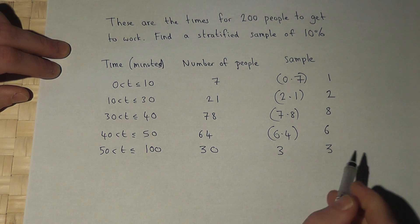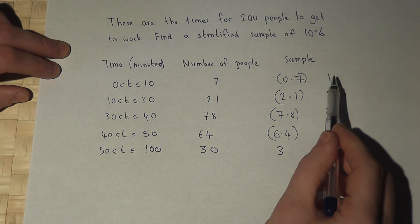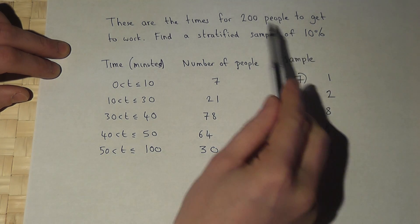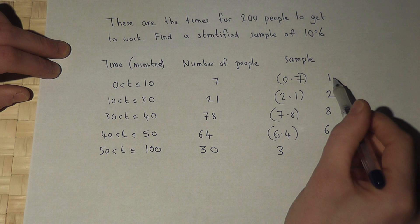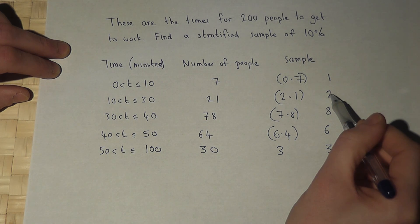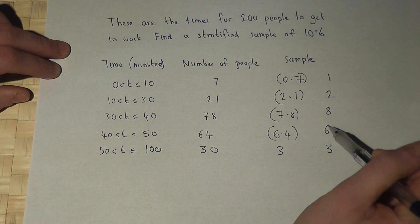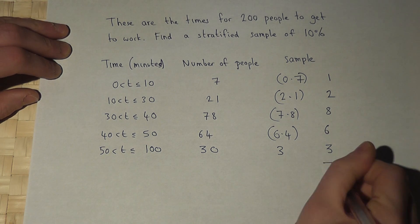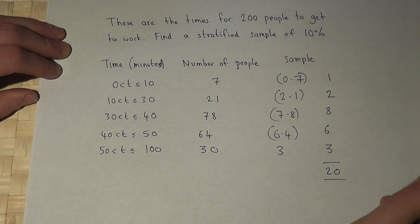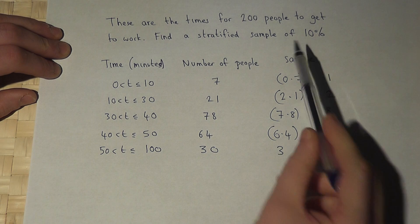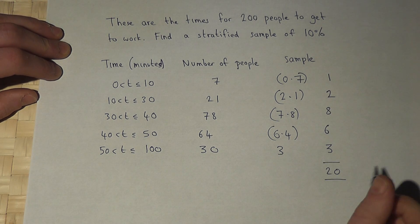Now the key thing to check here is that this gives us 10% of 200. Now 1 plus 2 is 3, 3 plus 8 is 11, 11 plus 6 is 17, plus 3 is 20. So that gives us a required sample of 10% of 200.